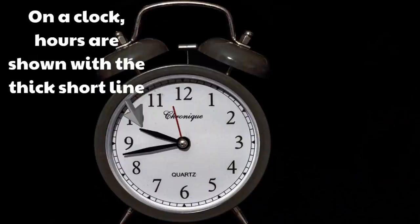On a clock, hours are shown with the thick, short line. And that's the line on the clock that moves the slowest because hours are so long.